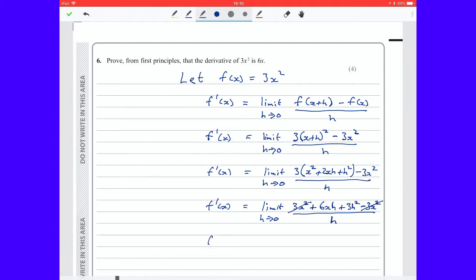So we've got the limit as h tends to 0 of 6xh plus 3h squared all divided by h.